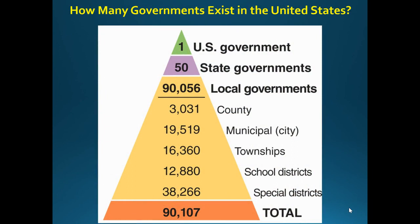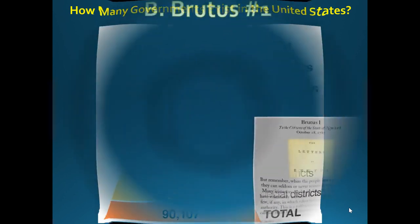We have a lot of different governments: you've got the federal U.S. government, then you have 50 state governments, then a whole bunch of local governments — county, city, townships, even school districts are governments.